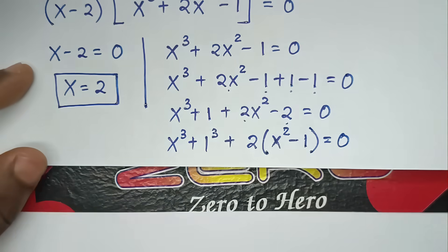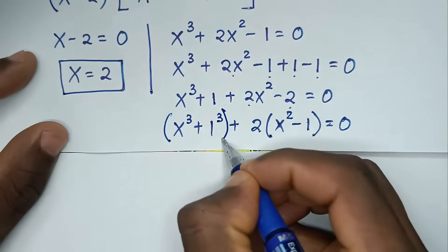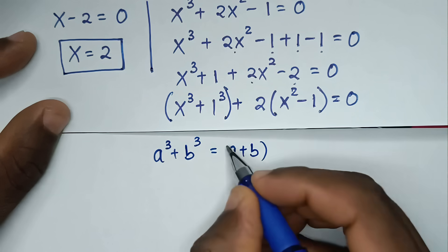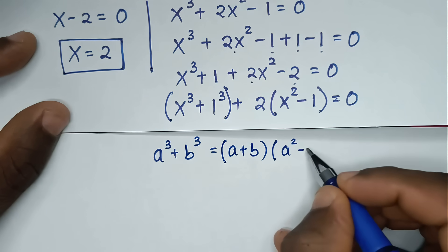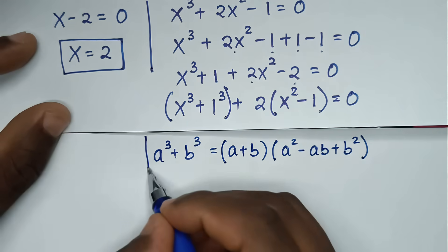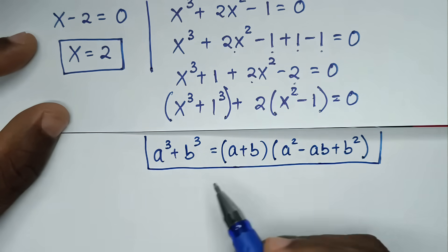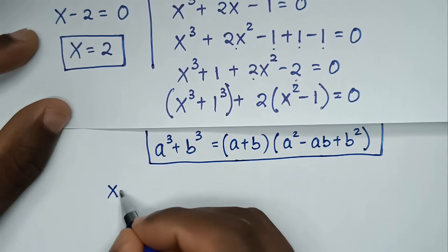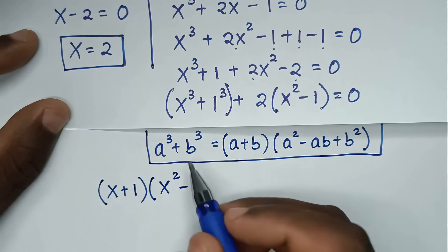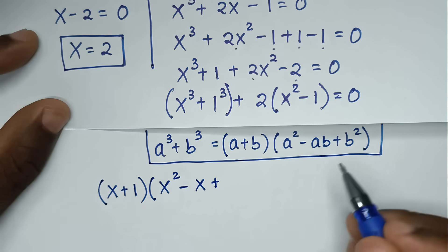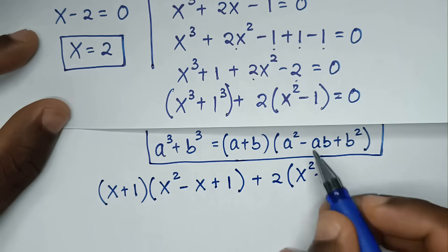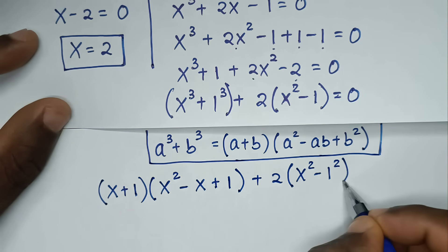From this part here, it's in the form of a³ + b³, which equals (a + b)(a² - ab + b²). By applying this rule, a plus b is x plus 1, so x plus 1 bracket, then a² is x², minus ab is minus x times 1 which is x, plus b² is 1² which is 1, bracket, plus 2 bracket, x² minus 1, and 1 is 1², so this is a difference of two squares, is equal to 0.